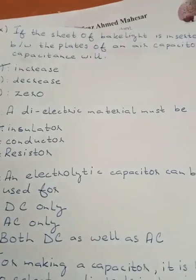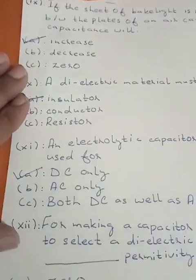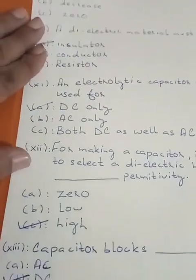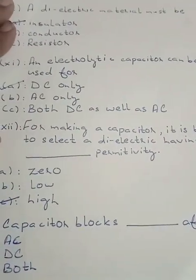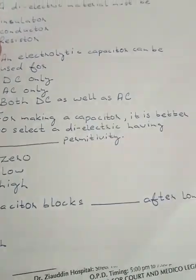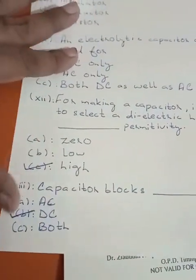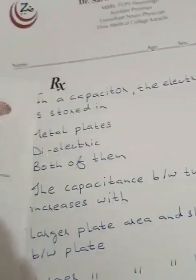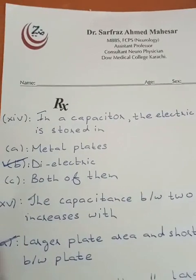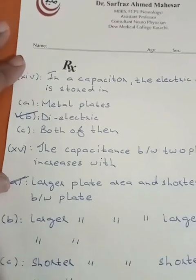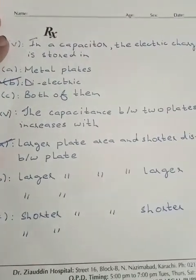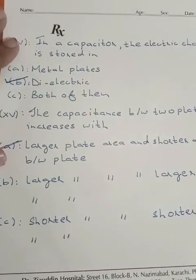If a sheet of a dielectric is inserted between the plates of an air capacitor, the capacitance will of course increase. A dielectric material must be an insulator. An electrolytic capacitor can be used for direct current only. For making a capacitor, it is better to select a dielectric having high permittivity. A capacitor blocks DC after a long time — that is direct current after long time. If a capacitor stores electrical energy, it is stored in the dielectric.